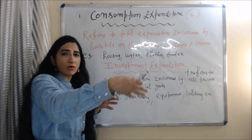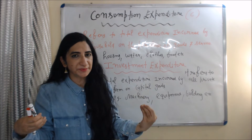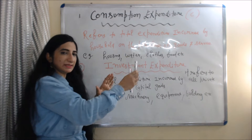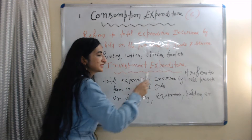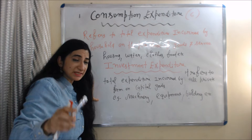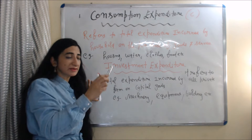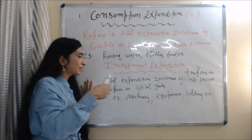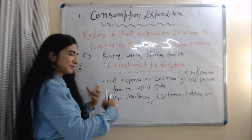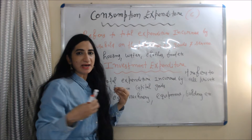For example, expenditure on housing, water, clothes, and food are examples of consumption expenditure. The second component of aggregate demand is investment expenditure. Investment expenditure refers to total expenditure incurred by all private firms on capital goods.